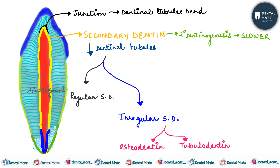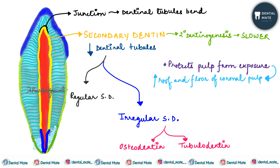Irregular secondary dentine can be of two types: osteodentine and tubular dentine. The function of secondary dentine is to protect the pulp from exposure in older teeth. It is present in greater amounts in the roof and floor of the coronal pulp.